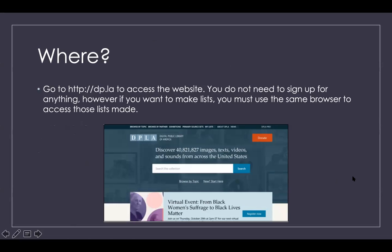To access DPLA, go to DP.LA — that's the address to type in. You can also Google 'DPLA' and it should pop up as your first search result. The great thing is you do not need to sign up for anything. You don't need a library card. The only thing is, if you want to make lists to go back to, you need to use the same browser, since lists are tied to your browser settings.